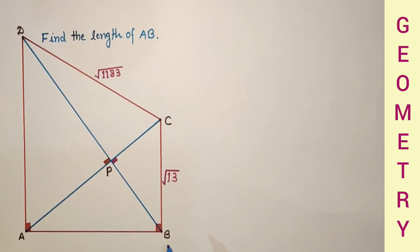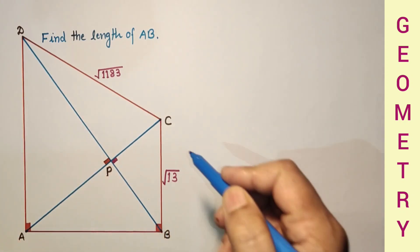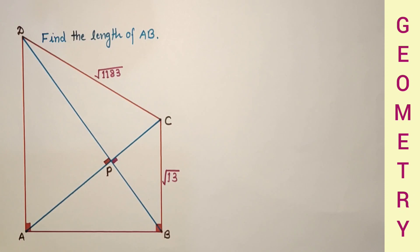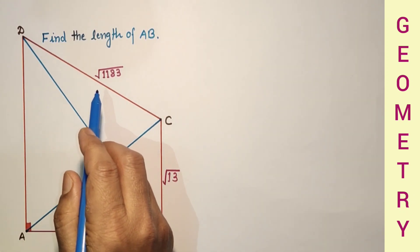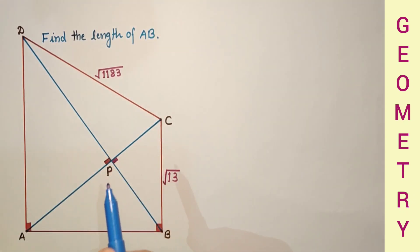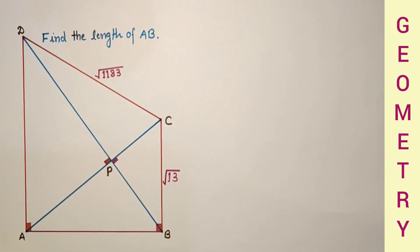Hello friends, dear students and respected viewers. Today we will do this question. It's a trapezium. AD and BC are parallel. Angles DAB and angle CBA are right angles. Diagonals are intersecting at right angle. Length of DC is given as under root of 1183 units. And length of BC is given as under root 13 units. And we have to find the length of side AB.